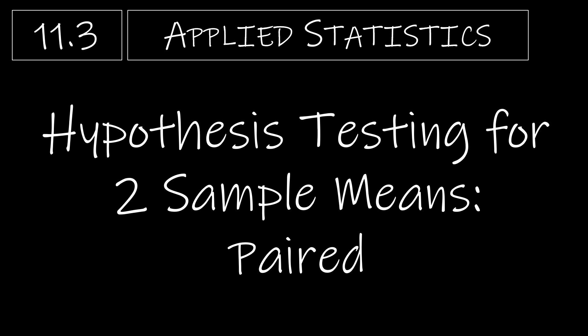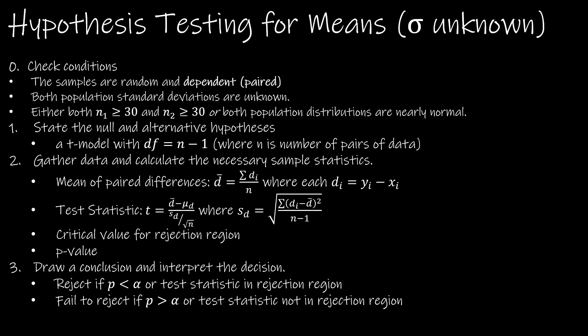Section 11.3 is all about hypothesis testing for two sample means when we have paired data. Here is your summary page that tells you everything you need to know.